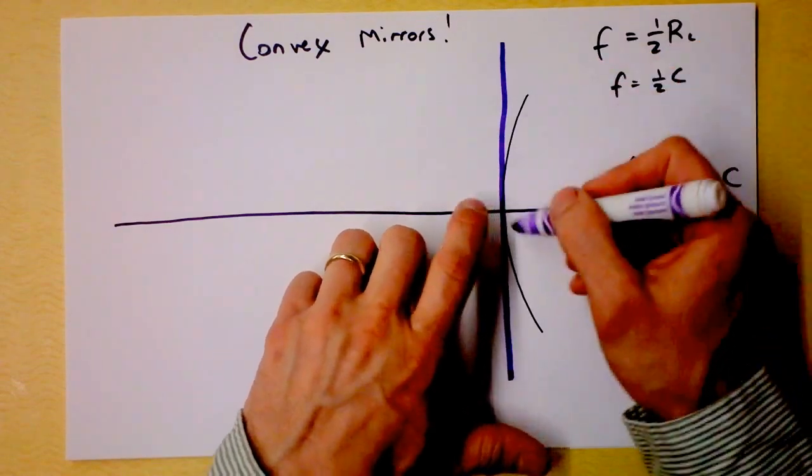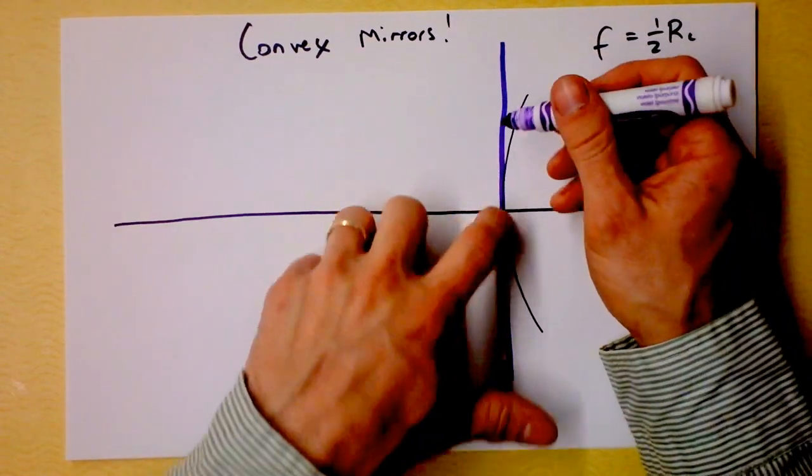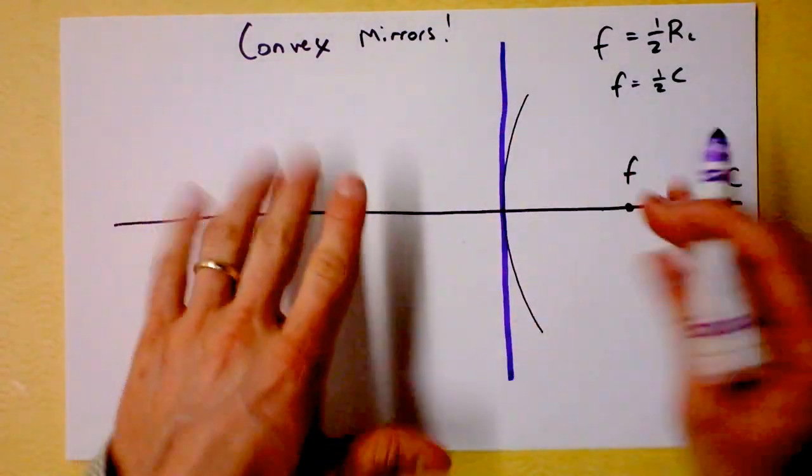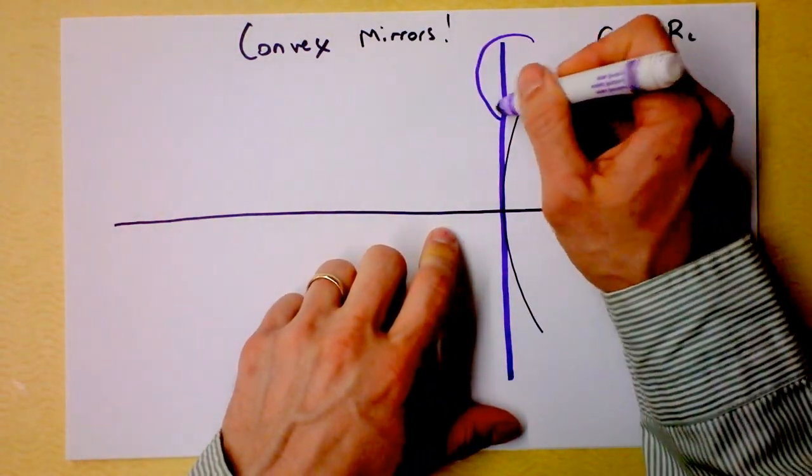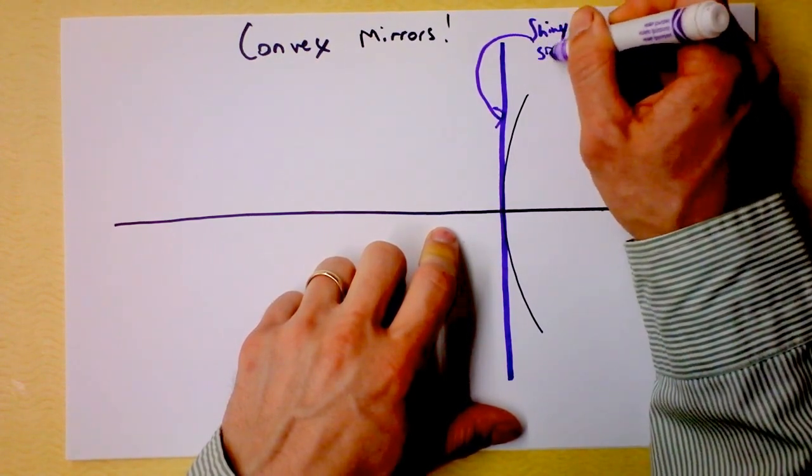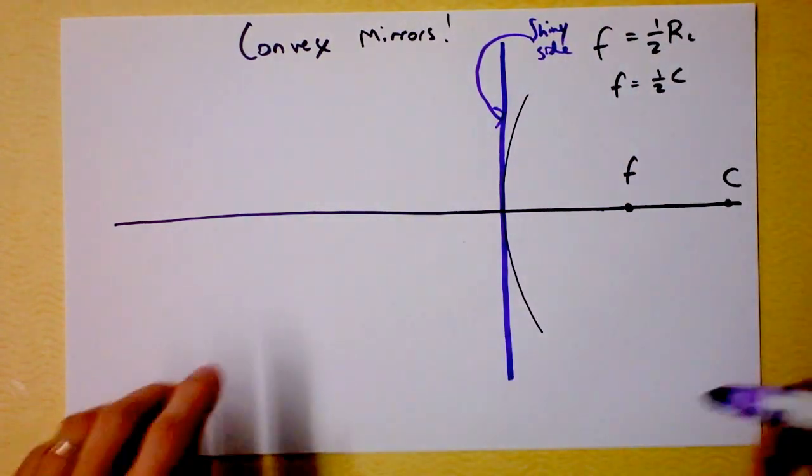Remember, the mirror is curving away, but I have to say the rays act or bend as if they'd gone right there. So the thing about a convex mirror is that the shiny side is over here. This is the shiny side. And I'm going to give you a few rays again.